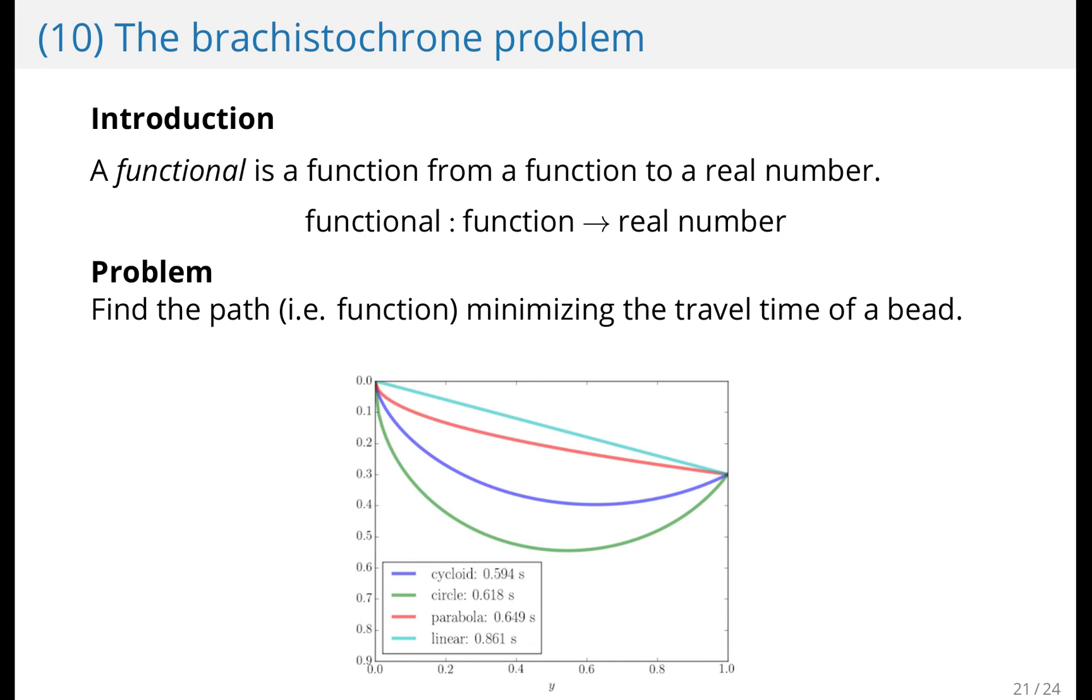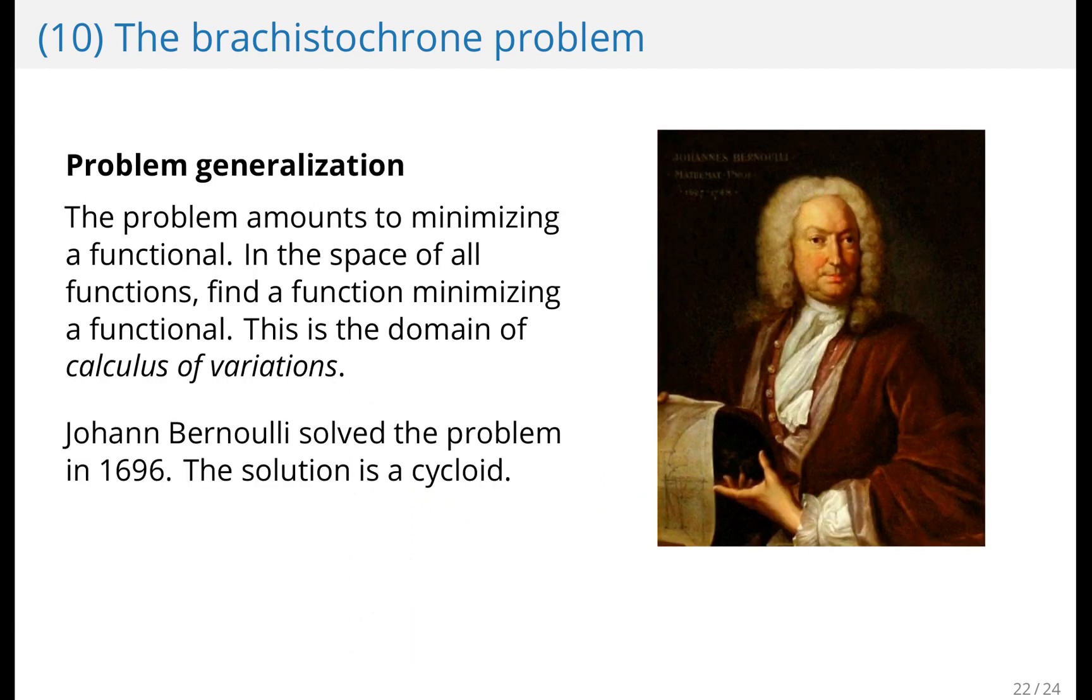So this problem is finding the path or the function minimizing the travel time of a bead. Or imagine that it's a skate ramp and you would like to get from a to b as fast as possible. Do you go on a straight line because it's the shortest path, or do you go down first to allow some acceleration to help speed you up? This problem can be solved using the technique of calculus of variations. And it was solved by Johan Bernoulli in 1696. The solution is given by a cycloid and it was shown in the previous slide.